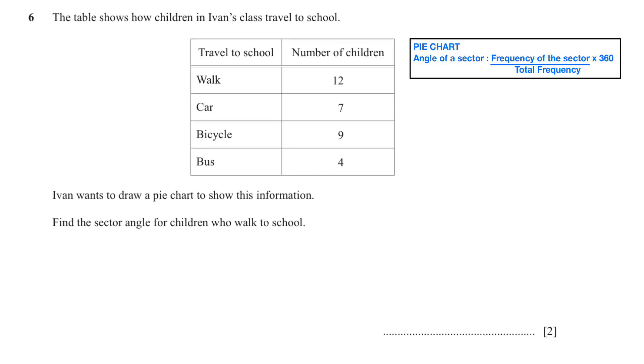We need to use the formula: angle of a sector equals frequency of the sector over total frequency multiplied by 360. Frequency of the sector of the children who walk is 12, and the total frequency we are going to add all these up. That will give us 32. So 12 over 32 multiply by 360 and we will get 135 degrees.